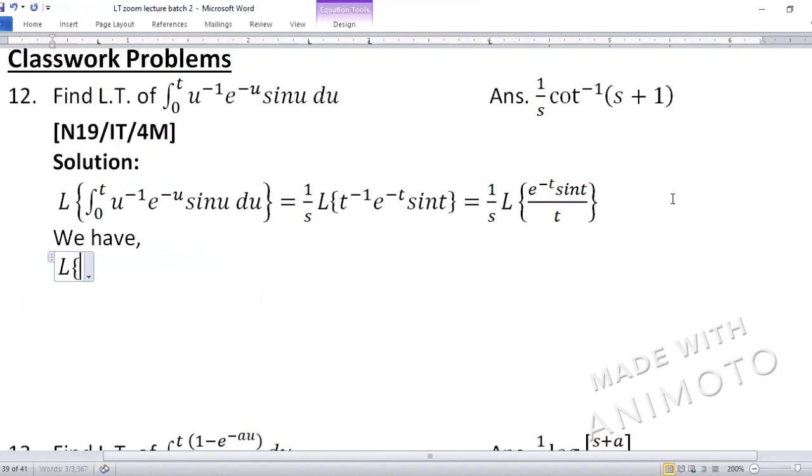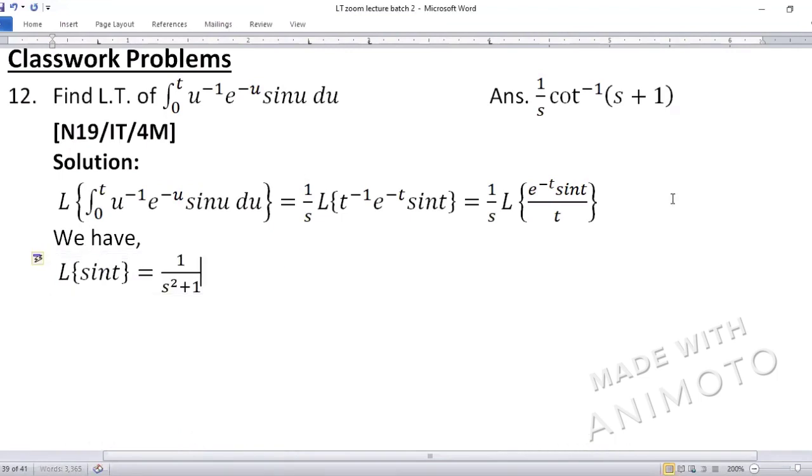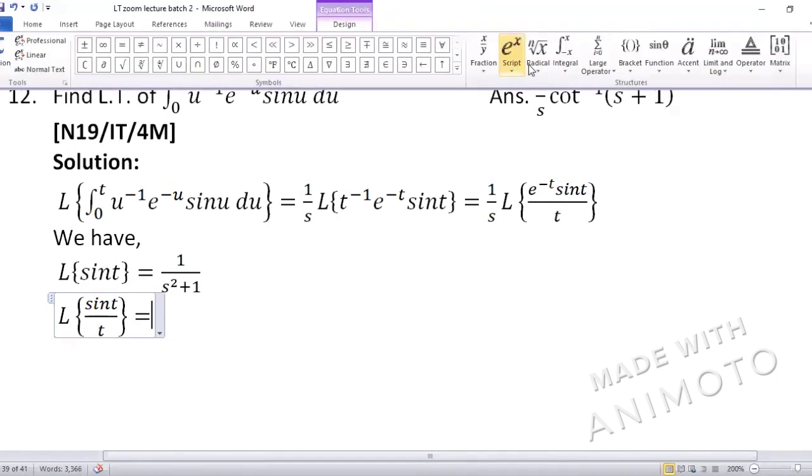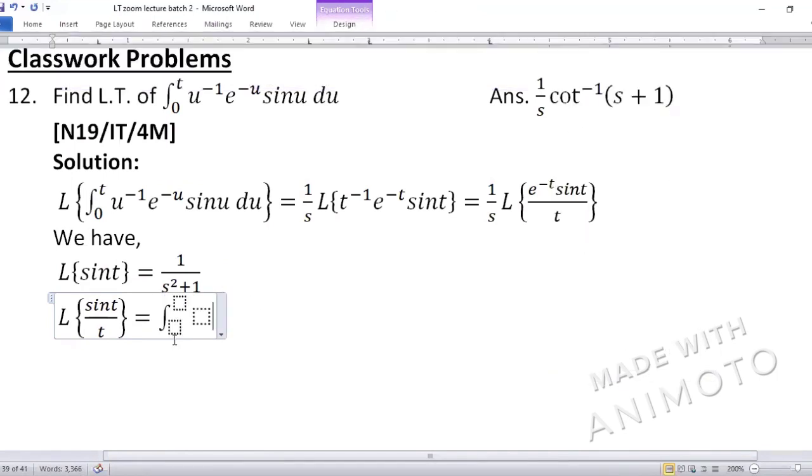Let us first solve only sine t. Sine t ka laplace as we know 1 upon s square plus 1 hota hai. Us ke baad let us solve not first shifting property. First division by t. Division by t hota tha ek integration se. Integration jis ka limit s to infinity. S and the upper limit infinity. And the function inside wohi jo upar bana diya hai. One upon s square plus 1 ds. Then we learnt is integration ko solve karte hai. Toh ban jata hai answer tan inverse.